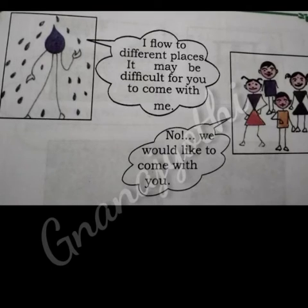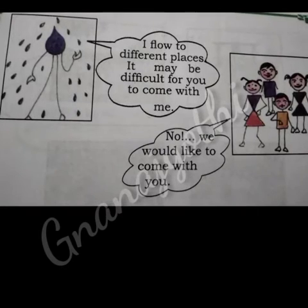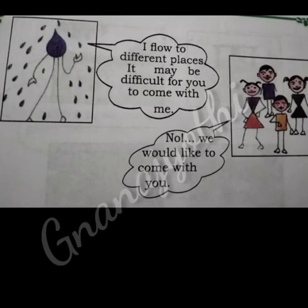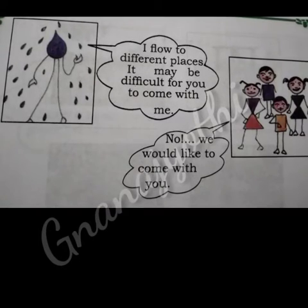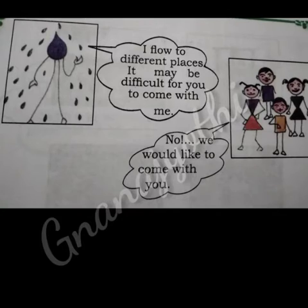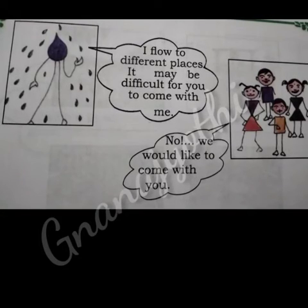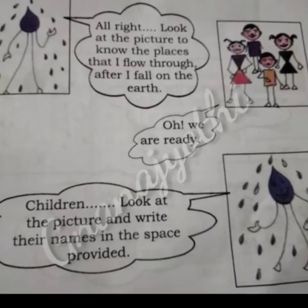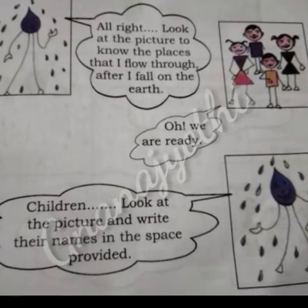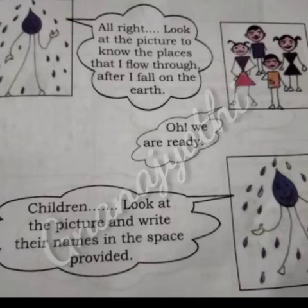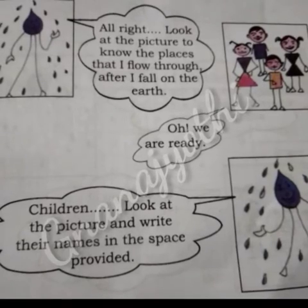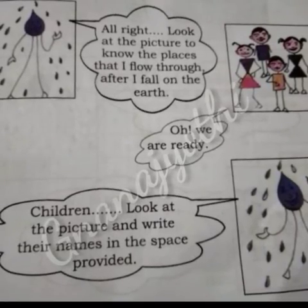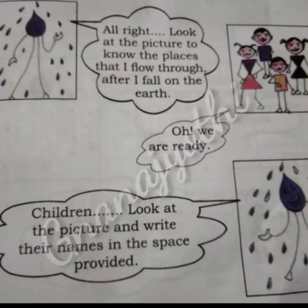The drop of water replied: I flew to different places, it may be difficult for you to come with me. Children said: No, we would like to come with you. Alright, look at the picture to know the places that I flew through after I fall on the earth. Children: Oh, we are ready.